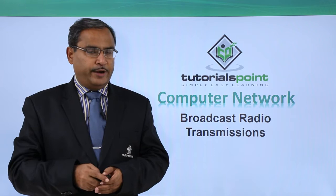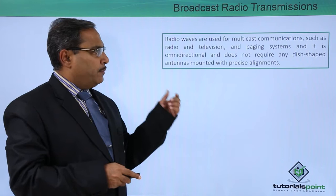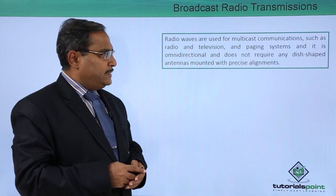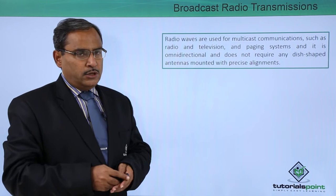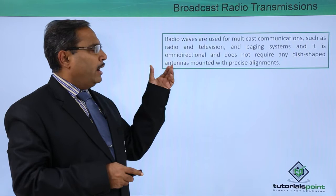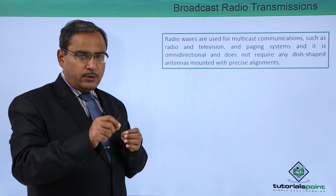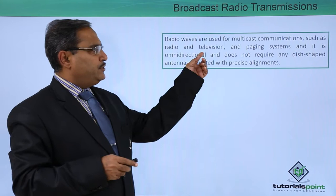In this video, we are going to discuss broadcast radio transmissions. Radio waves are used for multicast communications such as radio, television, and paging systems. It is omnidirectional and does not require any dish-shaped antennas mounted with precise alignments. We are using radio waves for the purpose of multicast communication — that means from one source the data will be received by multiple receivers.